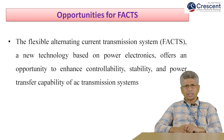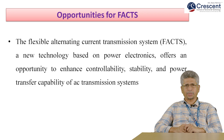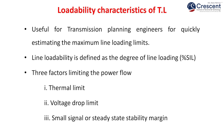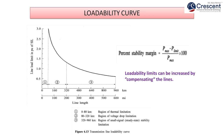Opportunities for FACTS: the flexible alternating transmission system, a new technology based on power electronics, offers an opportunity to enhance controllability, stability, and power transfer capability of AC transmission systems. The loadability characteristics of the transmission line are useful for transmission planning engineers for quickly estimating maximum line loading limits. Line loadability is defined as the degree of loading, that is surge impedance loading. Three factors limiting power flow are: thermal limit, voltage drop limit, and small signal or steady-state stability margin. The loadability curve shows the percentage stability margin and how much maximum load the line can be loaded.